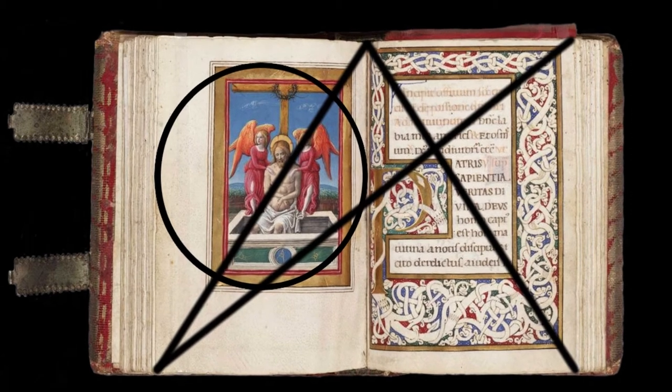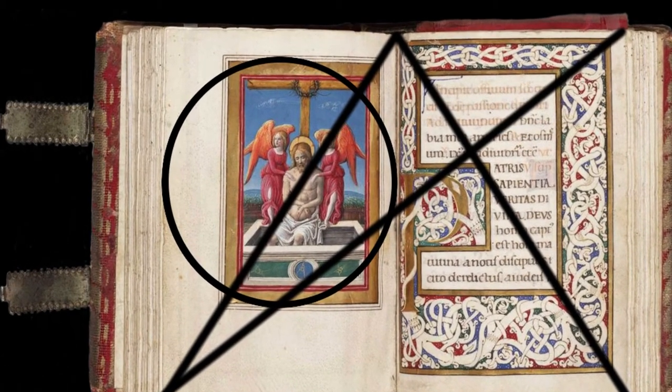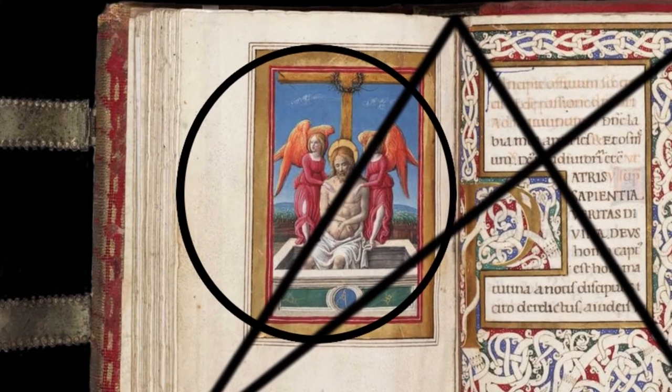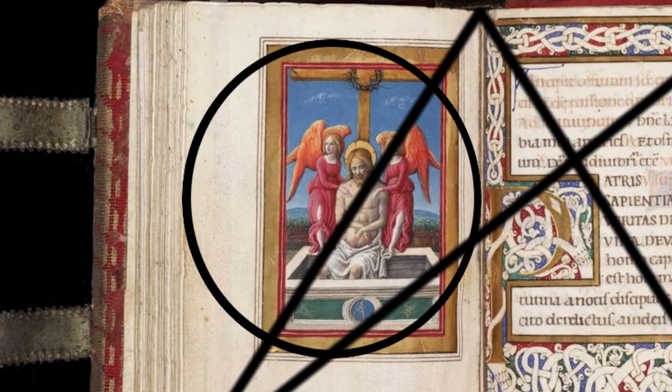Pues, si se parte de una superficie de proporción 2 a 3, la altura de la caja de escritura coincide con la anchura de la página, y los márgenes se ajustan a la relación 2, 3, 4, 6.